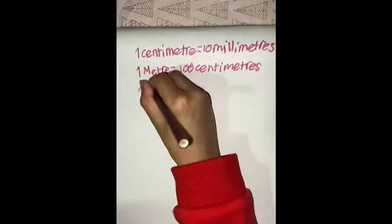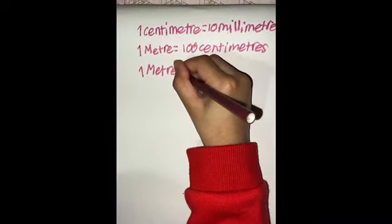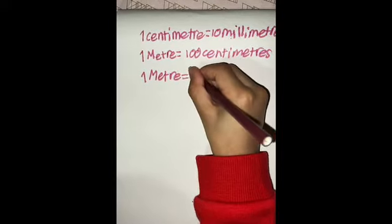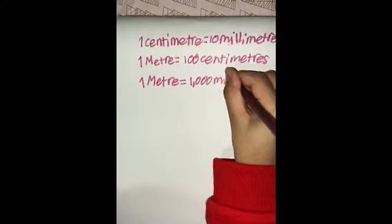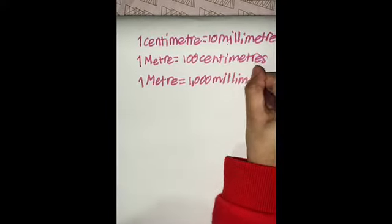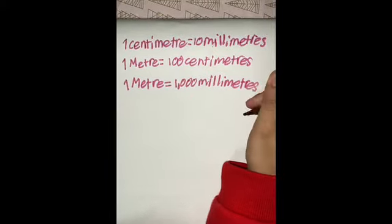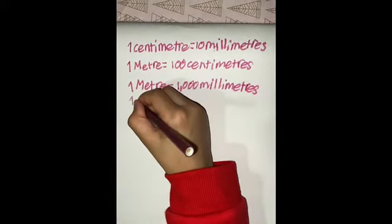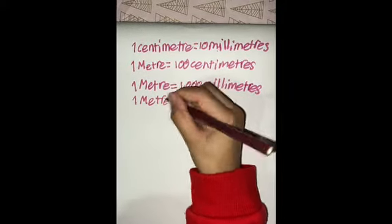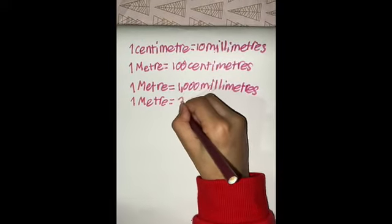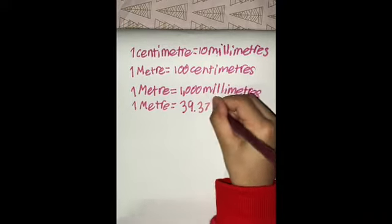We have another meter. One meter, but this time it will be one meter equals one thousand millimeters. From here it will be a bit hard. We have another meter. One meter equals 39.37 inches.